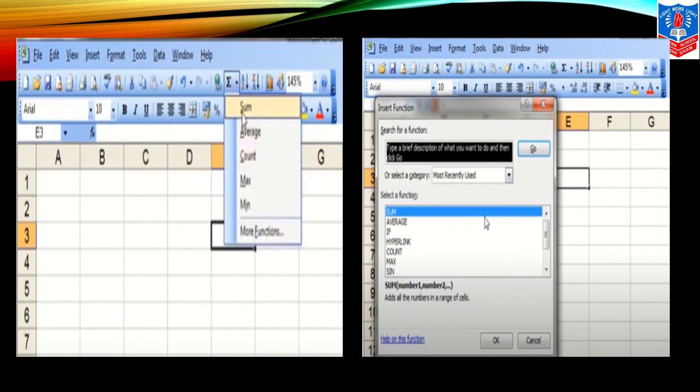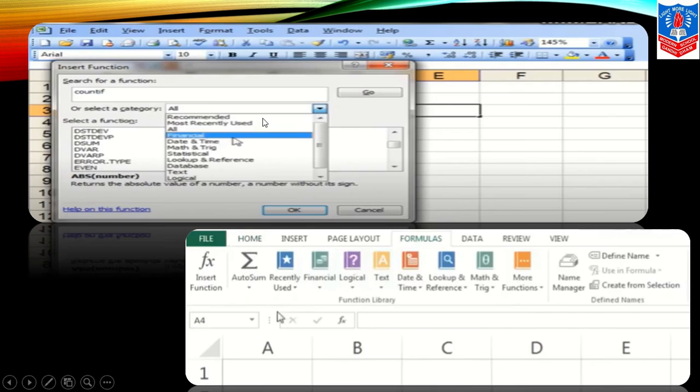In function wizard, insert function, in function menu, here we are having sum on the toolbar. Many of the functions are displayed over here: insert function, auto sum, recently used functions, financial, logical, textual, date and time, lookup and references, mathematical and trigonometry, and more functions. Here we are selecting, let's say, financial or we are selecting category for function. We are selecting the function name COUNT IF.